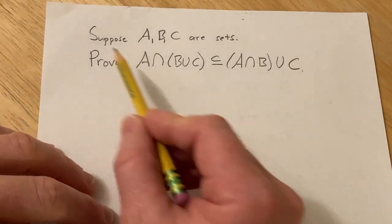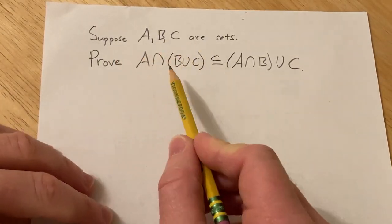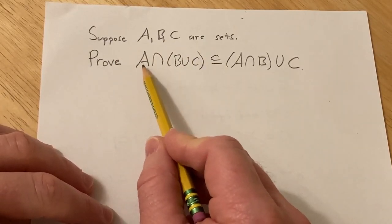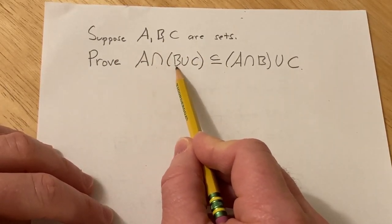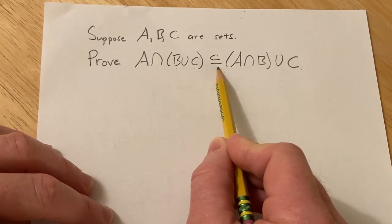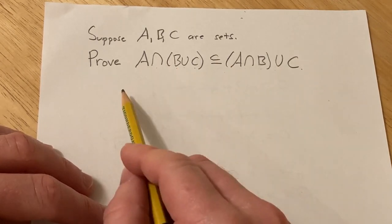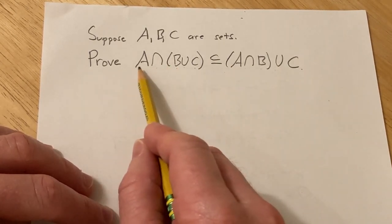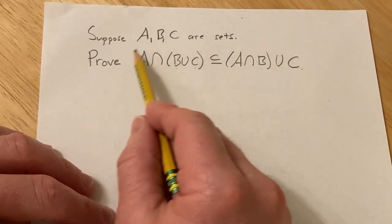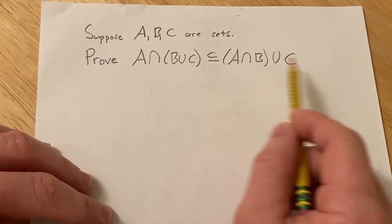Hi, in this problem we're going to do a proof. Suppose that A, B, and C are sets, and we want to prove that A intersected with B union C is a subset of A intersected with B union with C. So to do this, we are going to basically show that every element in this set is also an element in this set.